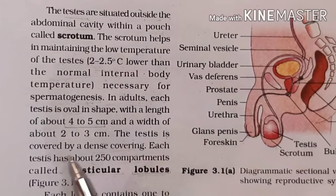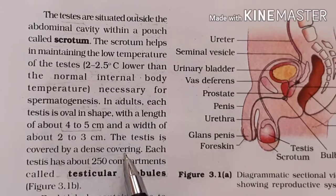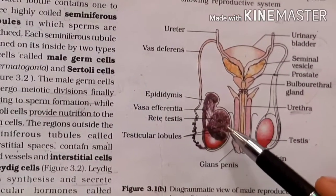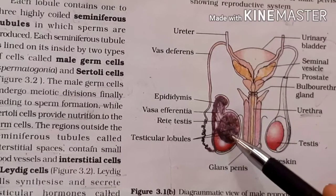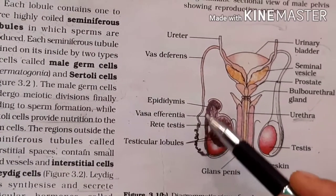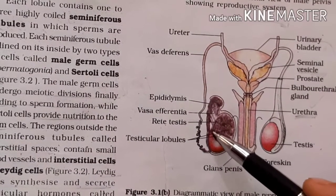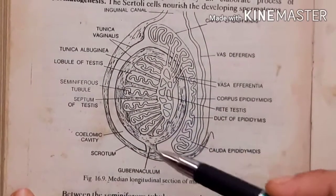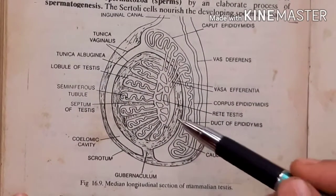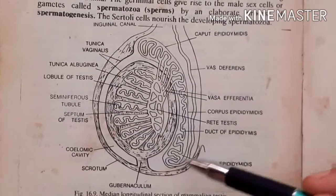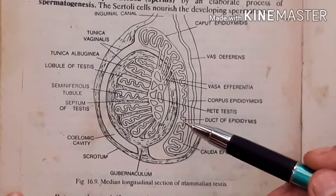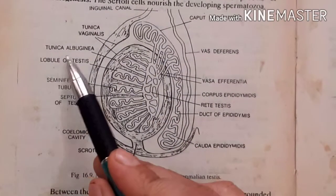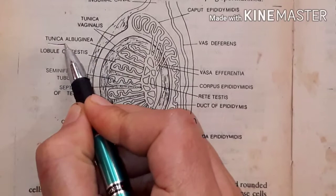The testis is covered by a dense covering called the tunica albuginea.